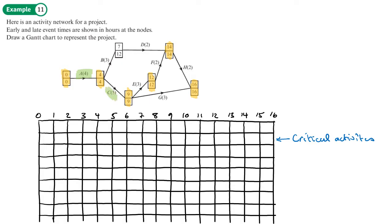C is critical. Four plus five is nine. E is critical. Nine plus three is 12. F is critical. And H is critical. So they're all going to go along the top. Now notice that the times here in the hours, the times go on the lines, not in the boxes.